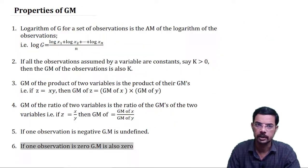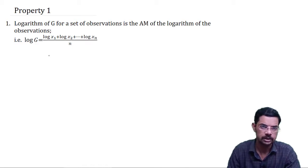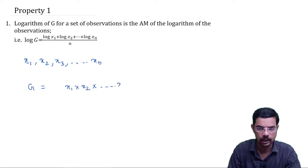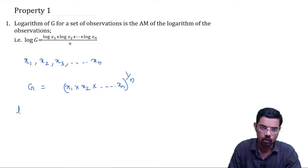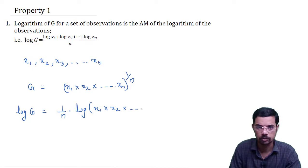Now let us understand some properties of geometric mean. The first property is that the logarithm of G for a set of observations is the arithmetic mean of the logarithm of the observations. For n observations x1, x2, x3 up to xn, G is defined as (x1 into x2 into ... xn) raised to 1 by n. When you take log on both sides, log G equals 1 by n into log of (x1 into x2 into ... xn).